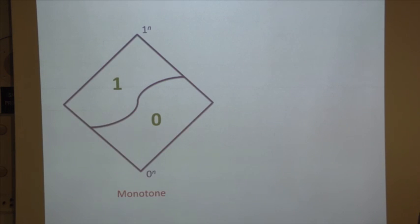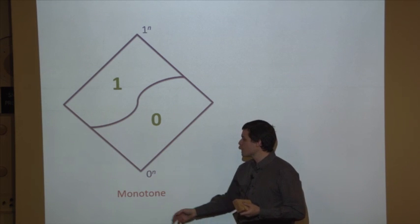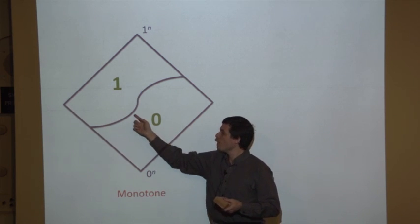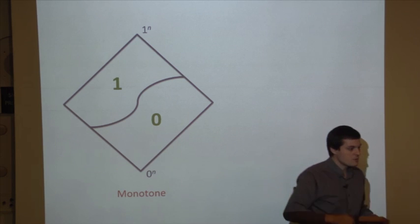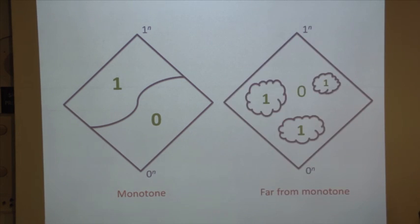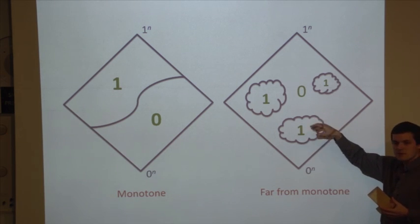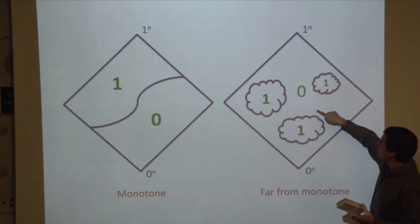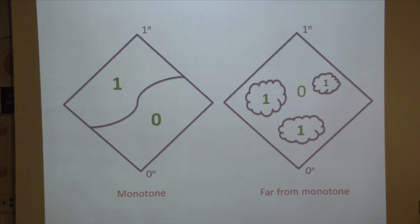There's a useful picture to have in mind. You have the Boolean hypercube with the all-zeros input at the bottom and the all-ones input at the top. Monotone functions have ones up top and zeros down below — any way you walk upward, you'll only pass from zero to one, never from one to zero. On the other hand, far-from-monotone functions are harder to visualize, but one cartoon is that they have clumps of ones and zeros mixed together, with places where you could walk upward from a one and reach a zero.